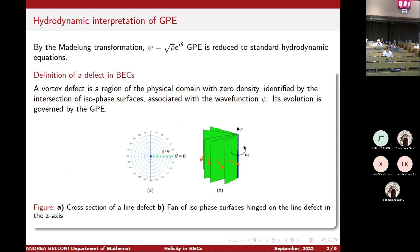A vortex defect is a part of the domain with zero density. We can formalize it as the intersection of isophase surfaces, where the phase is of course the one connected with the Madelung transformation, so the evolution is given by the GPE. Here is a figure showing the cross-section of a line defect located on the z-axis, and on the right in blue the defect, in green an isophase foliation that intersects at the defect, and in red the velocity vector field normal to the isophase surfaces.